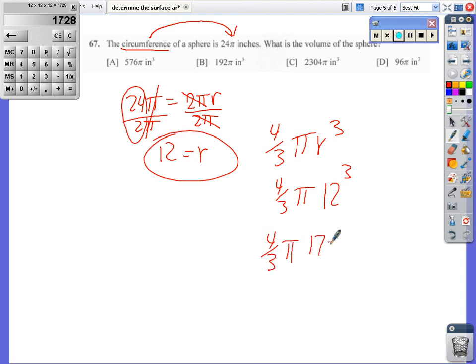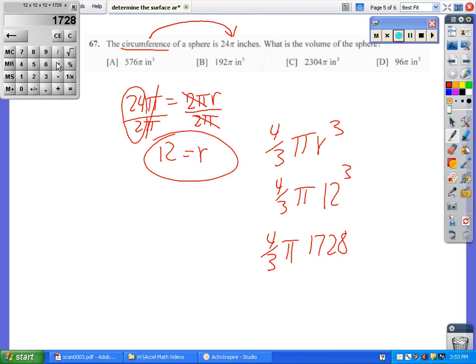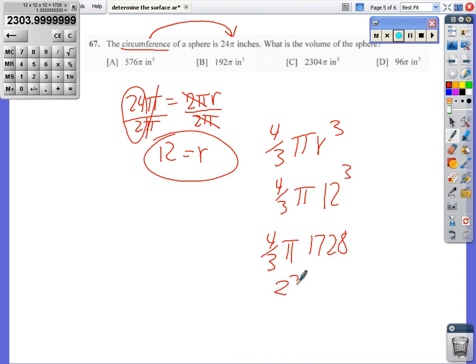And I get 2303.999 or 04 pi, that's going to be inches cubed. So 2304 pi inches cubed.